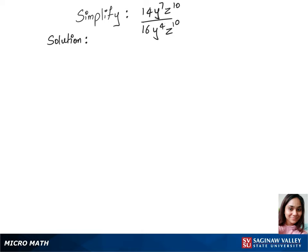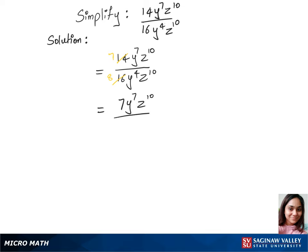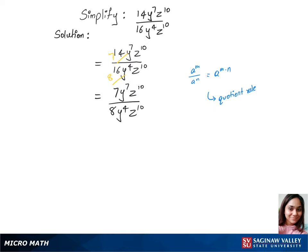To simplify this question, we'll first cross out 14 and 16. This gives us 7 times y power 7 times z power 10 over 8 times y power 4 times z power 10. Now we can use the quotient rule, and this will give us 7 over 8.